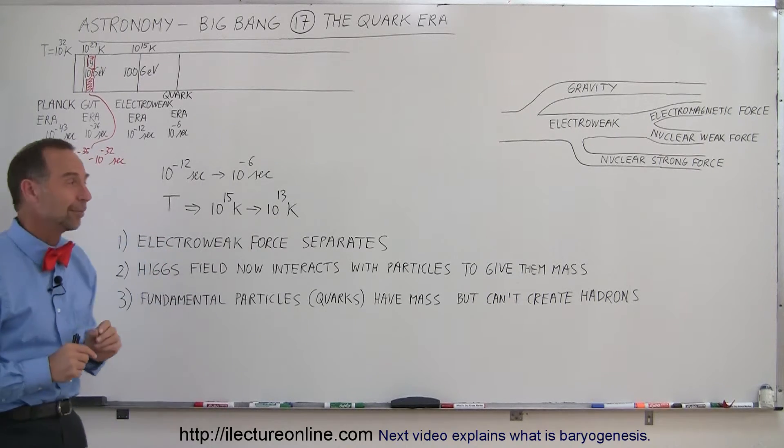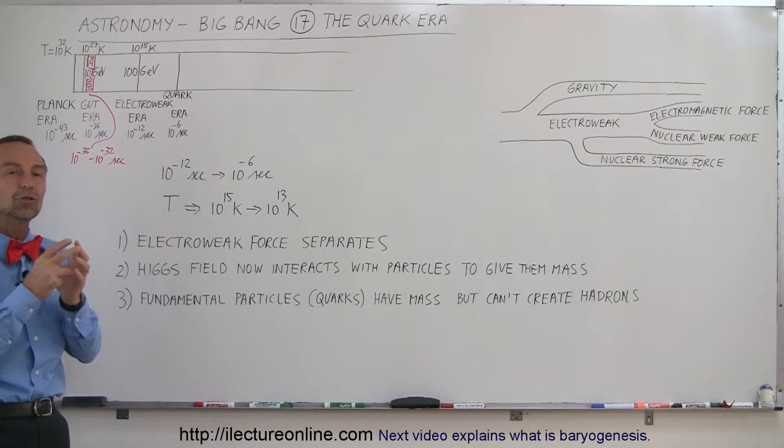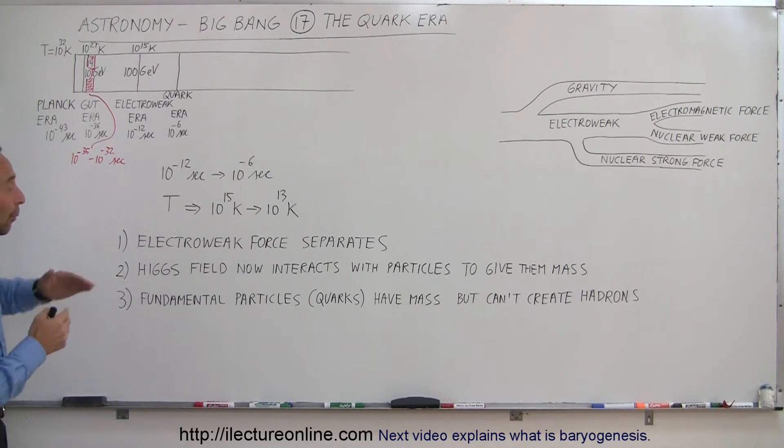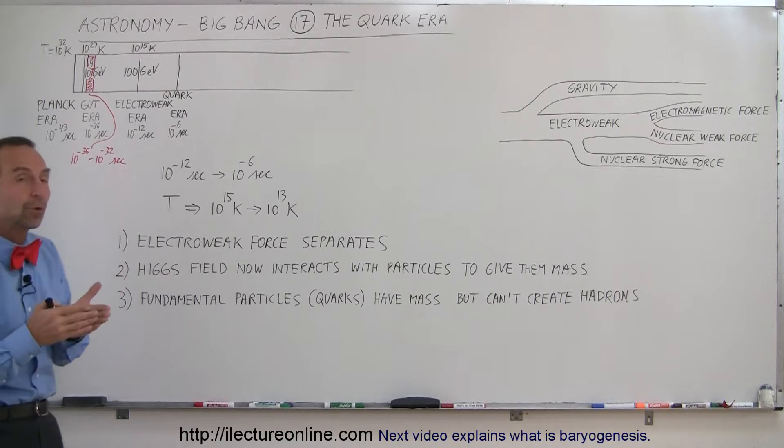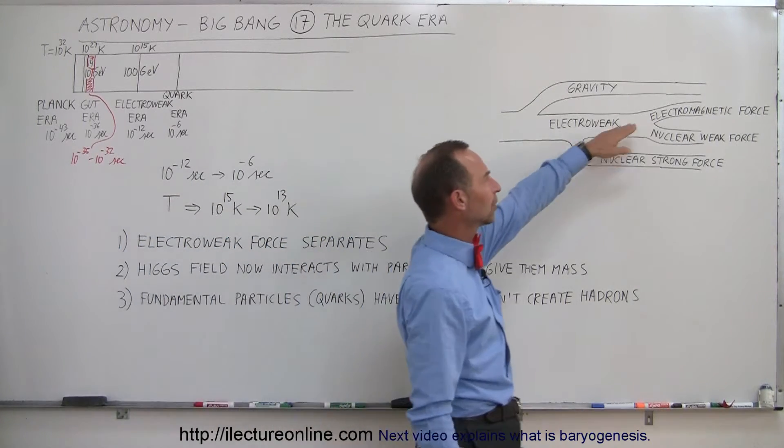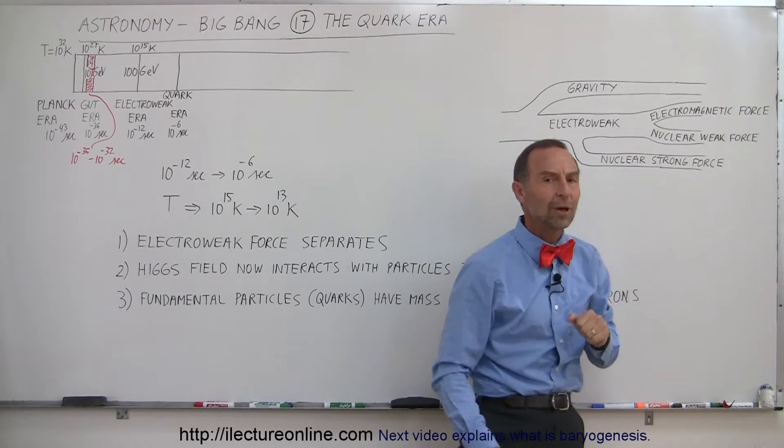So still very very hot. Too hot for particles to be able to coalesce into something that we're familiar with today. So what's going on during this period? Well one of the main events is that the electroweak force now separates into the two distinct forces it's made out of, the electromagnetic force and the nuclear weak force.